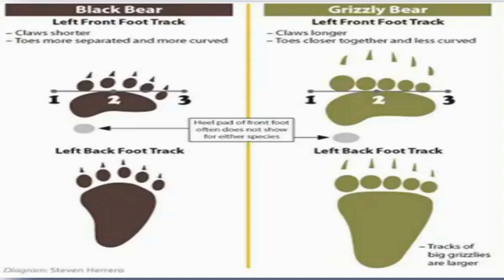Brown bear tracks are similar to the black bear but larger. In the left front track the claws are longer and the toes are more closely separated and more curved. The front foot track measures between 7.78 and 33.02 centimeters long by 12.7 and 22.23 centimeters wide, and 20.95 and 35.56 centimeters long by 12.07 and 21.59 centimeters wide for the hind tracks. Their claws are also generally longer than those of the black bears. The heel pad of the front foot often does not show for either species, and the negative space between the toes is filled with fur.